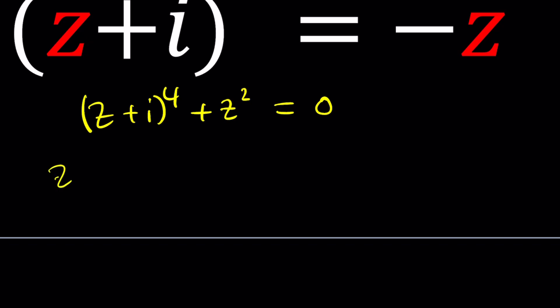So if you expand everything, you're going to get Z to the fourth plus 4 times Z cubed times I plus 6 by using the coefficients from the binomial theorem. And then 4Z times I to the third. And finally, you're going to finish with I to the fourth and then add another Z squared. And the whole thing is equal to zero.